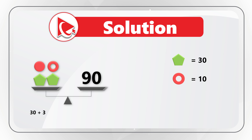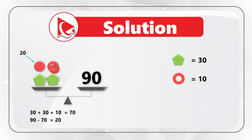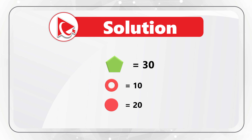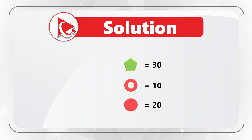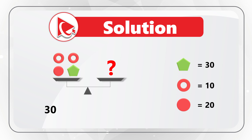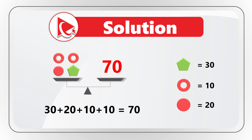Now we know all shape values: pentagon = 30, bagel = 10, circle = 20. We can calculate the missing number: 30 + 20 + 10 + 10 = 70. The correct answer is choice C, 70. Did you come up with the same solution? If not, please make sure to post your answer and rationale in comments.